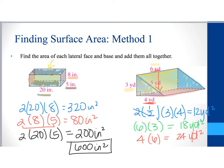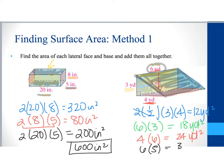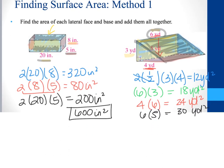The top face measures 6 yards by 5 yards, so 6 times 5 equals 30 square yards. Adding all faces together — 12 plus 18 plus 24 plus 30 — we end up with 84 square yards. That's how much wrapping paper it would take to cover this triangular prism.